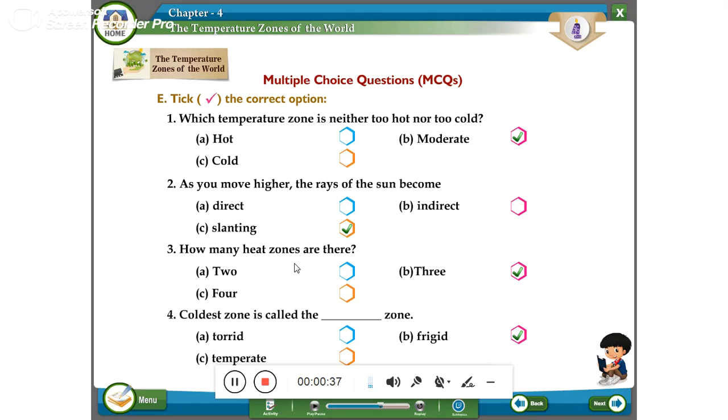How many heat zones are there? 2, 3, 4. So 3 is the correct answer. You can write. You can tick near the 3.